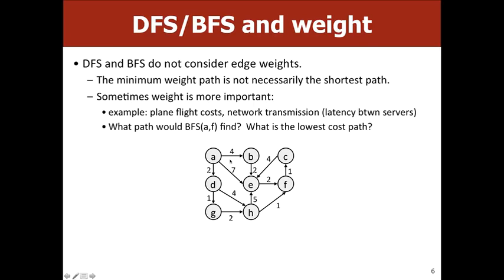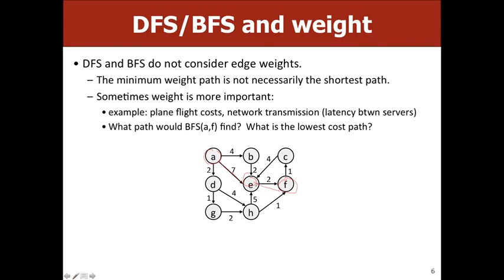As an example of why BFS is not good enough: BFS from A to F would find the path A to E to F, with a cost of nine. But a better path exists: A to D to G to H to F, which is cheaper overall. Sometimes making more stops is cheaper depending on your graph. With hundreds or thousands of vertices, this becomes much harder to see manually.